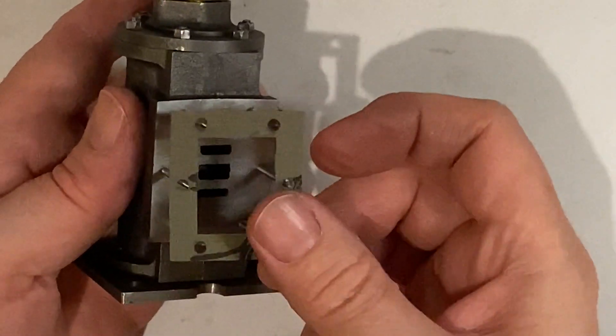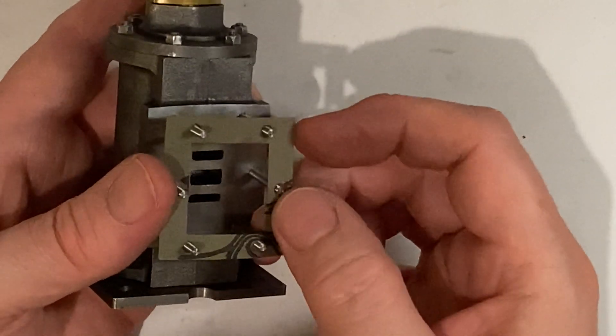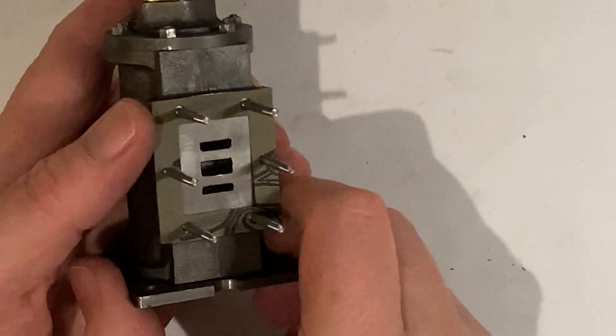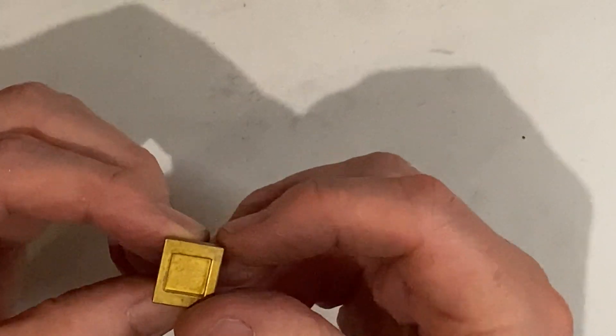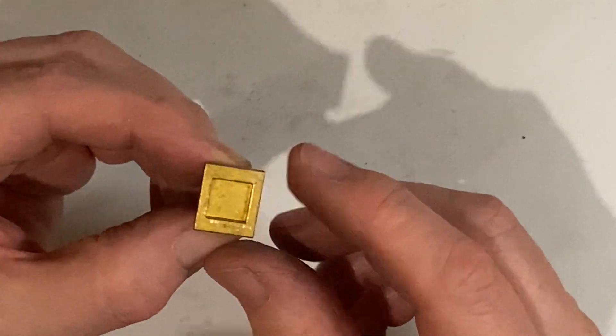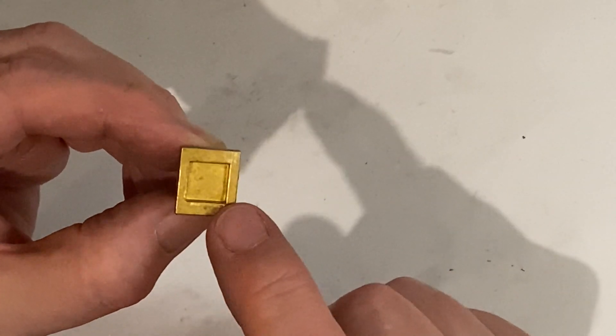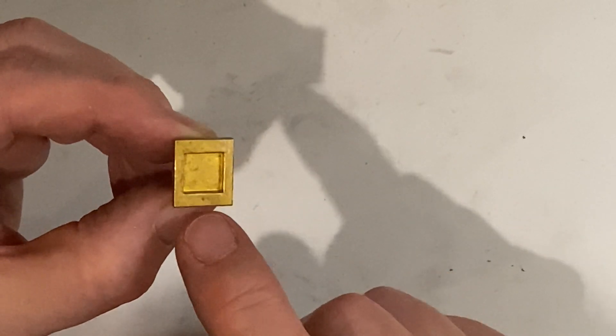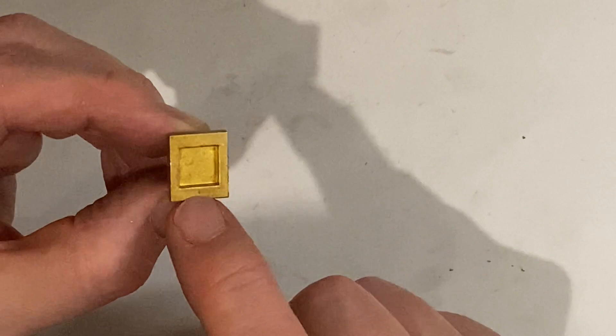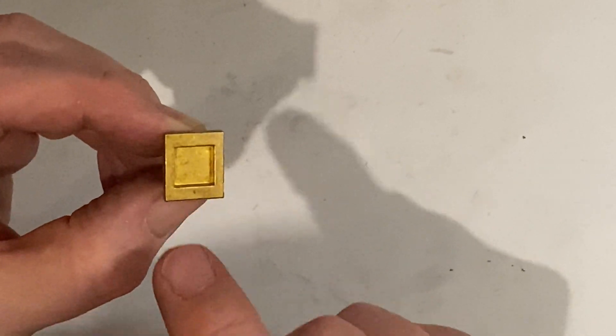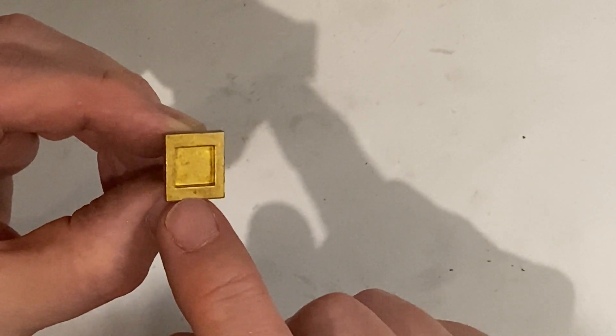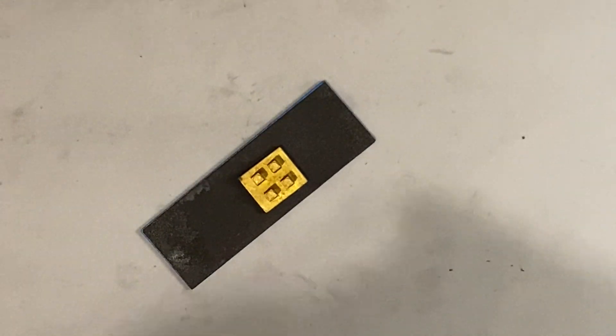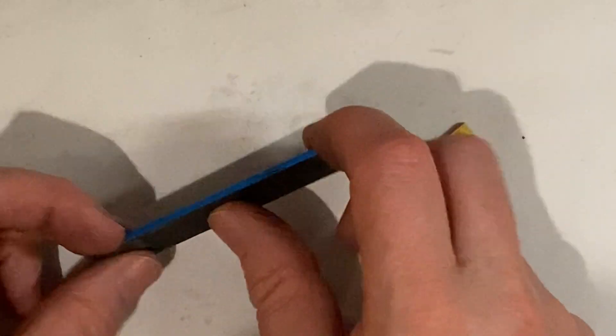Now before we go any further we'll take a look at the valve. The valve needs to provide a steam tight seal against the valve face on the cylinder. Now this is just a cast face. Although it's a good casting it's not flat enough to provide a steam tight seal. This is fairly easily resolved. All we need to do is sand the valve smooth.